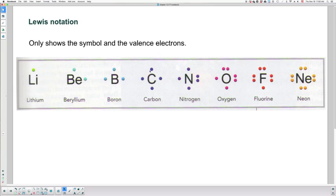So for example, carbon has four valence electrons, nitrogen has five, oxygen six, fluorine seven, neon has eight.